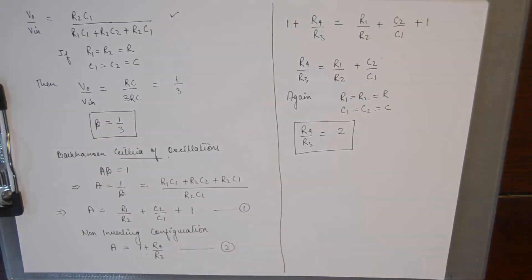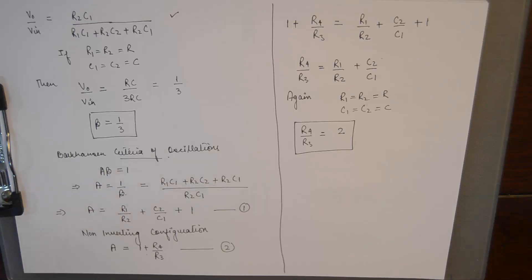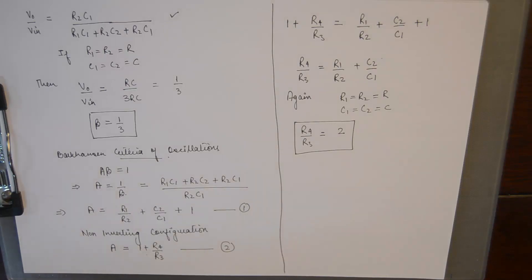This is how we derived the basic relationships of a Wien Bridge oscillator necessary to obtain sustained oscillations at the output. I hope this tutorial on the Wien Bridge oscillator was helpful in understanding the basic concepts and working. I will see you soon in the next tutorial. Till then keep visiting the channel and keep sharing. Have a good day. Bye.